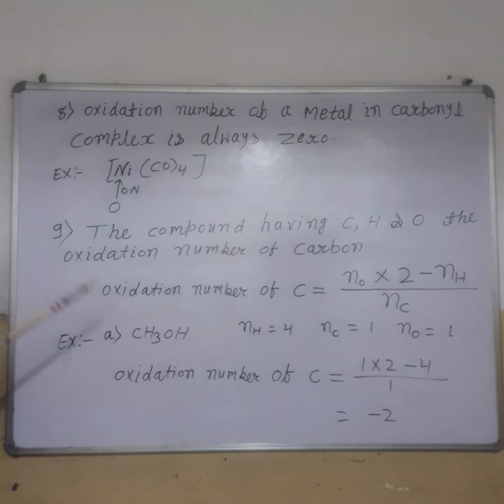For example, CH3OH: nH = 4, nC = 1, nO = 1. Using the formula, oxidation number of C = (1 × 2 - 4) / 1 = -2.